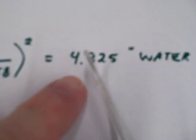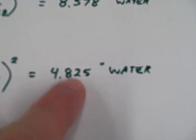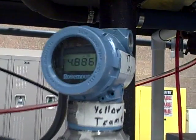We have calculated 4.825 inches of water. That's our calculated value, 4.825 predicted. And over here, 4.88, not too far off.